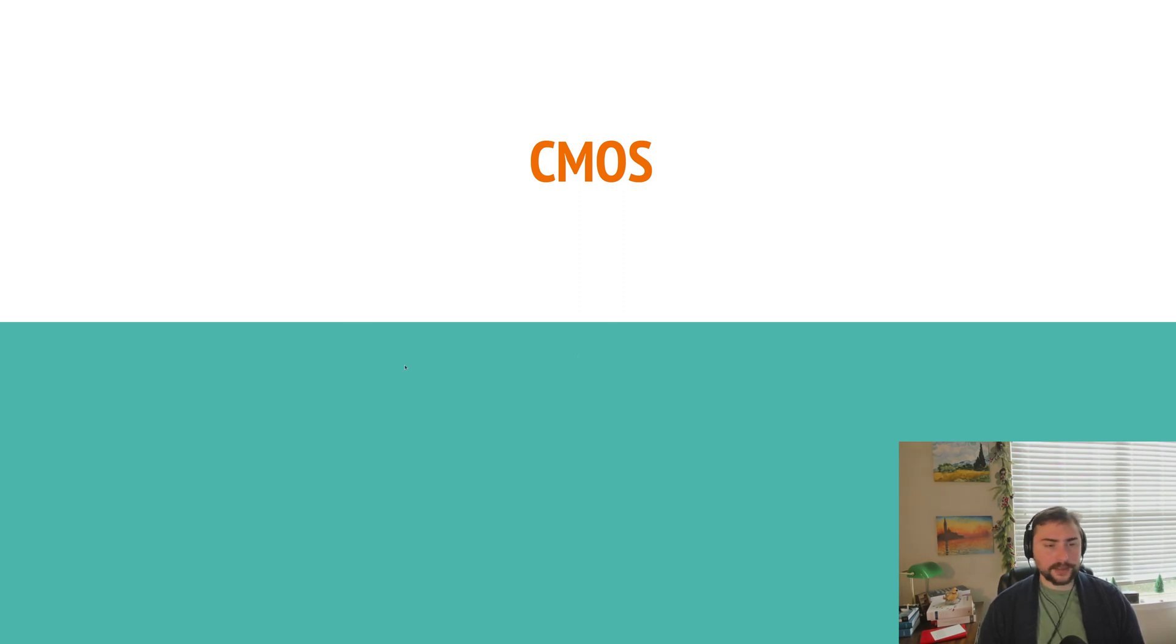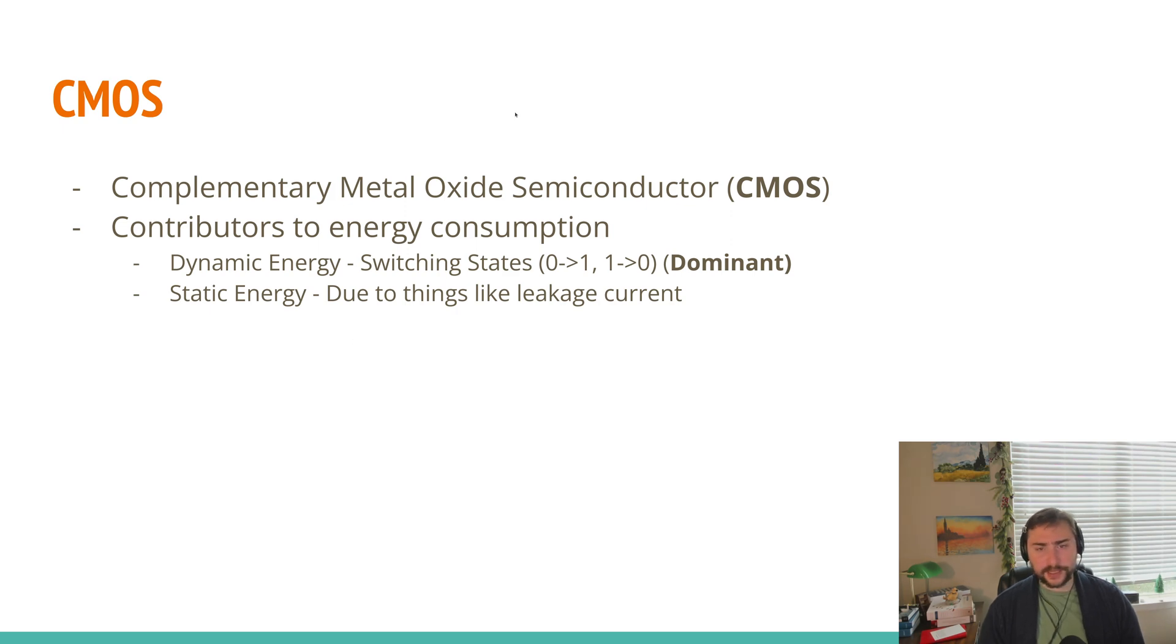CMOS just stands for Complementary Metal Oxide Semiconductor. This is really the driving technology behind our integrated circuits. Our CMOS has two main points of energy consumption. It's going to be our dynamic energy - the energy to switch states, going from zero to one or one to zero. And then we also have this component called static energy, which is due to things like leakage current. Typically, our dynamic energy is the dominant one of these two for energy consumption. So for many years, we could largely ignore static energy or not consider it nearly as heavily as we have to today. But we'll talk a little bit more about that later.